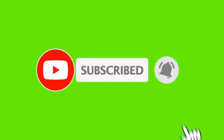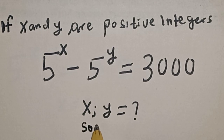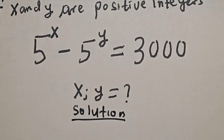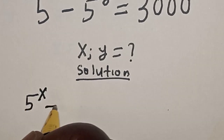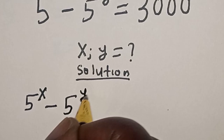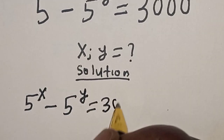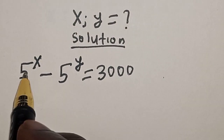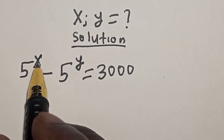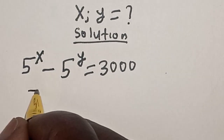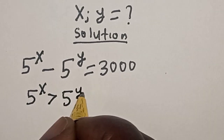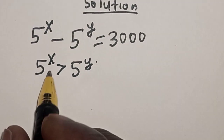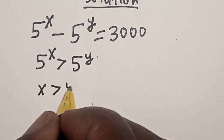Solution. We have the given equation: 5 raised to power x minus 5 raised to power y is equal to 3,000. We can see that 5 raised to power x is positive and greater than 5 raised to power y. Then, 5 raised to power x is greater than 5 raised to power y, which implies that x is greater than y.